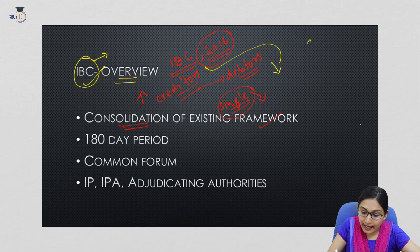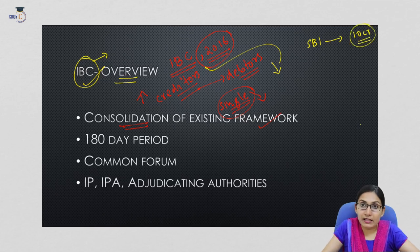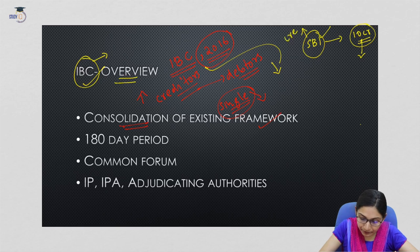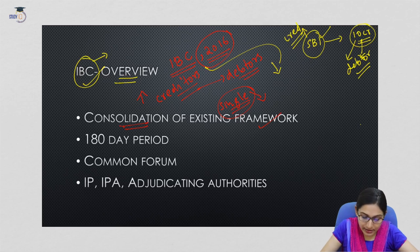For example, if a bank like SBI has given credit of rupees 10 crore to a company or individual, and there is a default in repayment, then SBI — the creditor — can have control over the assets of the debtor, which is the individual or company that borrowed the money.